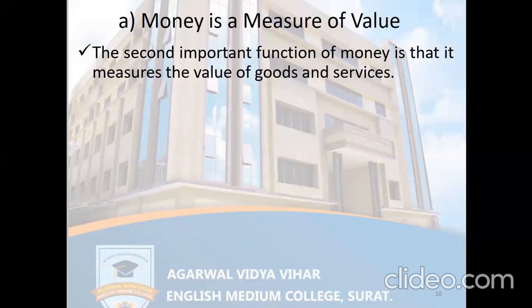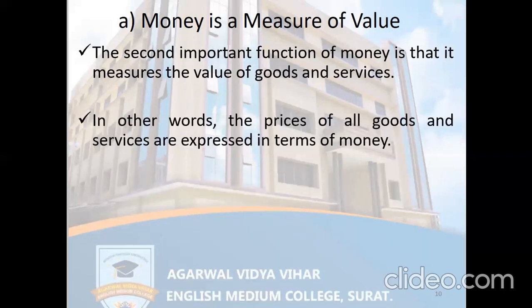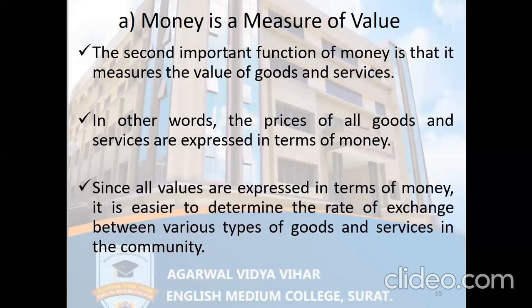So the second important function of money is that it measures the value of goods and services we are going to trade. The prices of all goods and services are expressed in terms of money. Money is the common thing binding all goods and services available in the economy. Since all values are expressed in terms of money, it is easy to determine the rate of exchange between various goods and services — we only need to remember the exchange rate in money terms, not for each individual commodity.